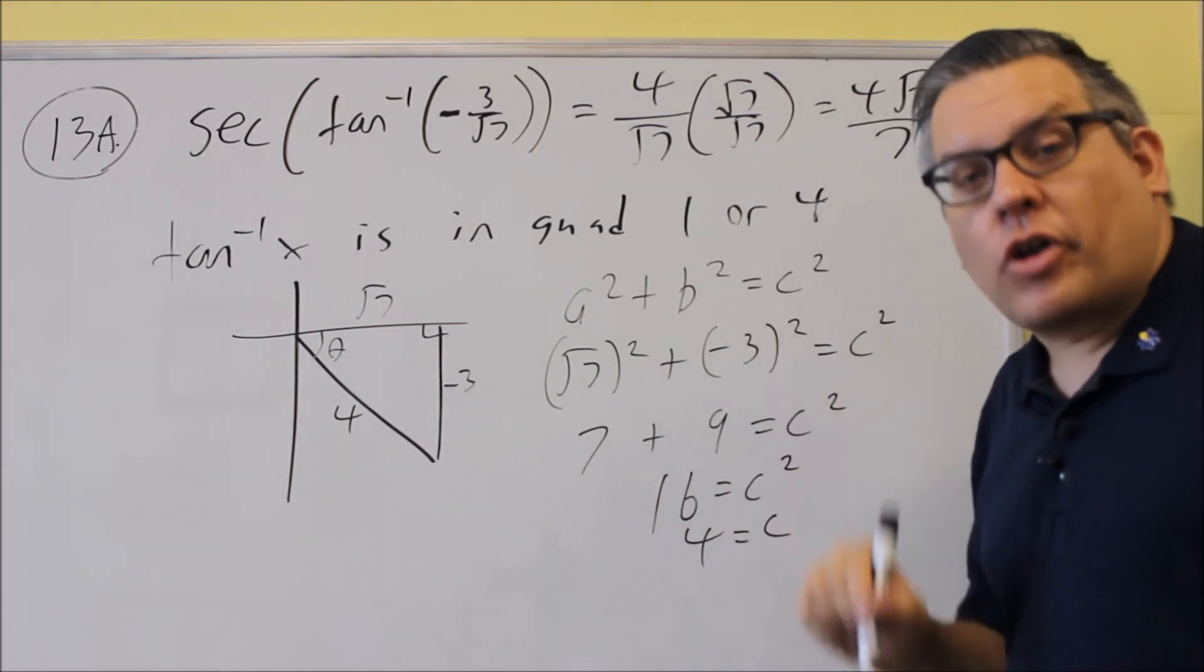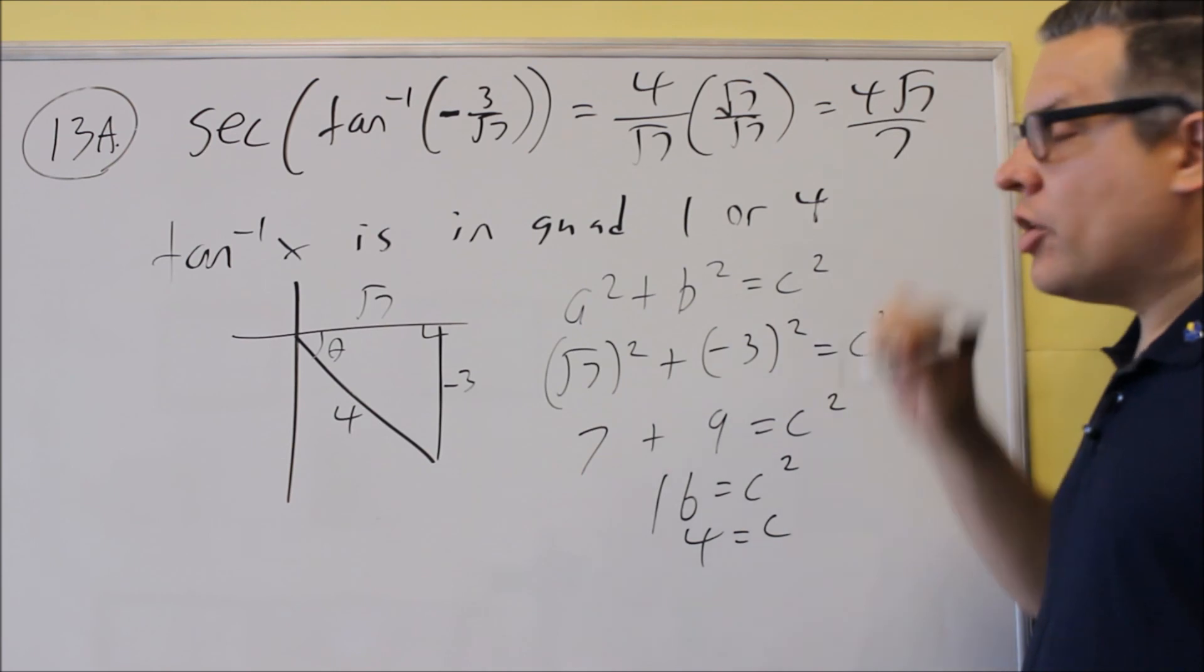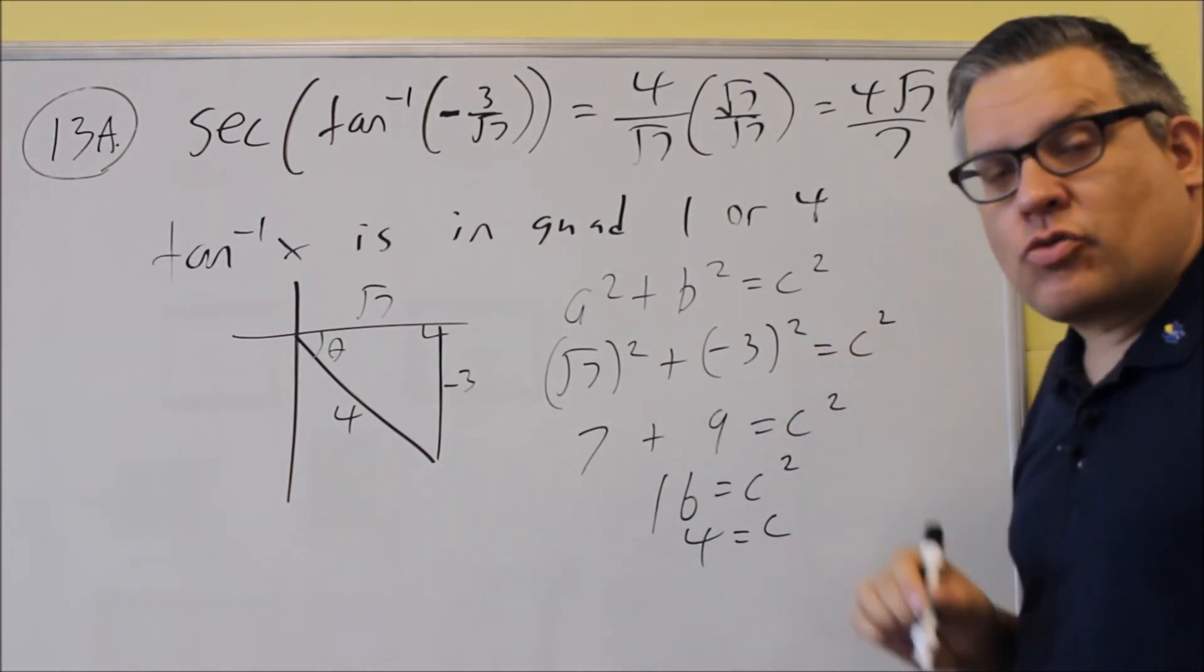So again, whenever it asks for exact value, you do not want to put a decimal. You want to make sure your answer is written as a fraction. Any square roots, you leave that in as part of your answer.